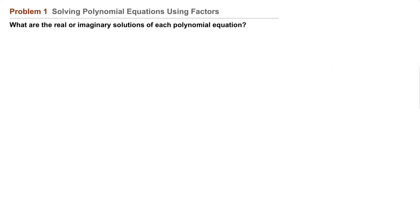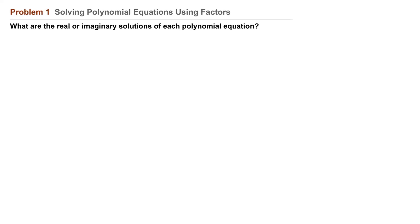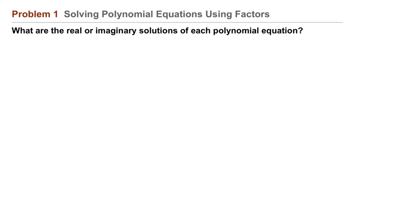Problem one: solving polynomial equations using factors. What are the real or imaginary solutions of each polynomial function? Part a: 2x cubed minus 5x squared equals 3x.